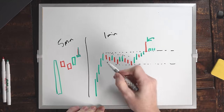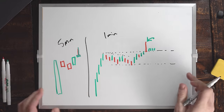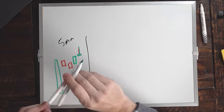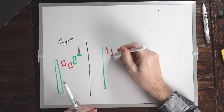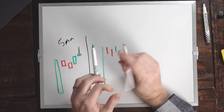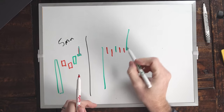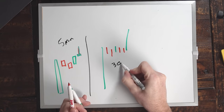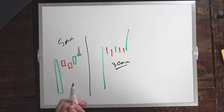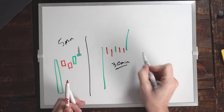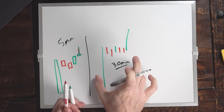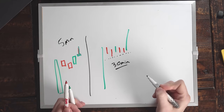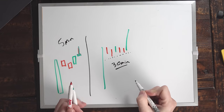A five-minute ABCD pattern takes at least 30 minutes to form — at minimum one green candle, two red candles, one more green candle, two more red candles, and then a breakout. That's six candles at five minutes each. It could take 45 minutes if there are more red and green candles before it finally breaks. The longer the ABCD pattern is forming on the five minute, the more it shows the stock is strong — it made a big spike and is holding that level, which is bullish.